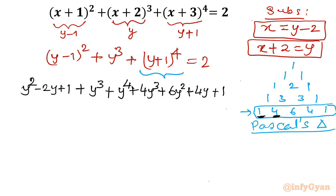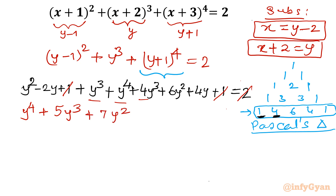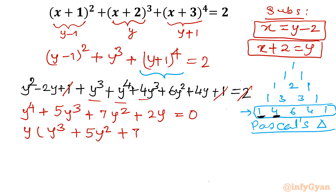Now cancel what you can — the constant 2 cancels with the 1+1 on the left. Collecting terms: y⁴ is the only fourth-degree term. y³ + 4y³ gives 5y³. y² + 6y² gives 7y². 4y − 2y gives 2y. So we get y⁴ + 5y³ + 7y² + 2y = 0, and y is clearly common, giving y(y³ + 5y² + 7y + 2) = 0.